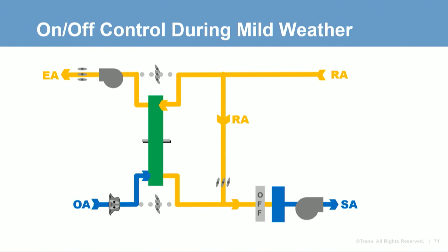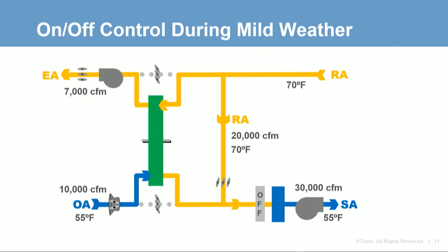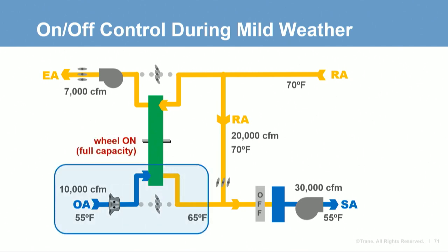To demonstrate, this schematic depicts an example mixed-air VAV system delivering 30,000 CFM of air at 55 degrees, using a wheel to exchange energy between 10,000 CFM of outdoor air and 7,000 CFM of exhaust. At a mild outdoor condition of 55 degrees, if the energy recovery device continues operating, it will transfer heat from the warmer 70-degree exhaust air to the cooler outdoor air, warming it to about 65 degrees. This preheated outdoor air mixes with recirculated return air for a mixed air temperature of 68 degrees, requiring the cooling coil to cool the air 13 degrees down to the 55-degree set point.